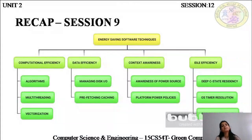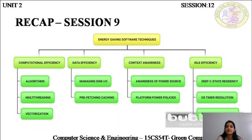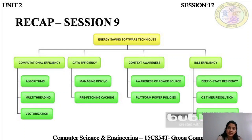In session nine of unit two of green computing, we were talking about energy saving software techniques. We were talking about how green computing consists of both hardware as well as software. It is not only hardware that results in environmental hazards because of the e-waste that is generated, but also the kind of software we use can lead to a lot of energy wastage and can decrease energy efficiency and increase power consumption. So while designing application programs, there are certain techniques that we can adopt in programming that is going to save energy and reduce power consumption.